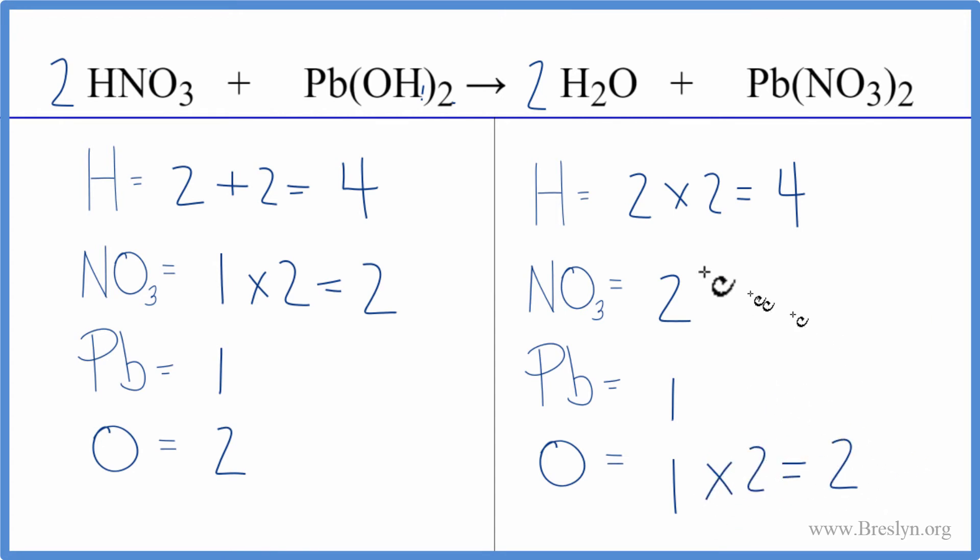You can see if we count this nitrate group as just one item, because we have it here and we have it here, it does make the balancing easier. And with these double displacement reactions, in this case a neutralization reaction, it can be quite helpful.